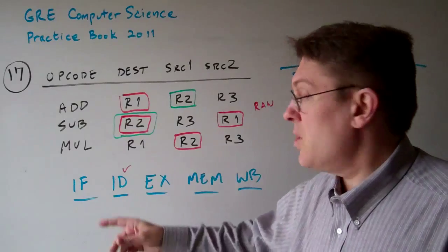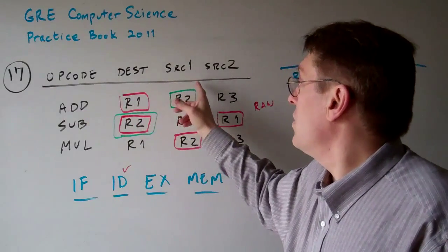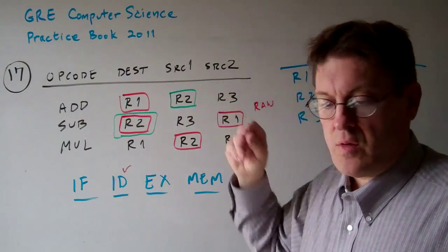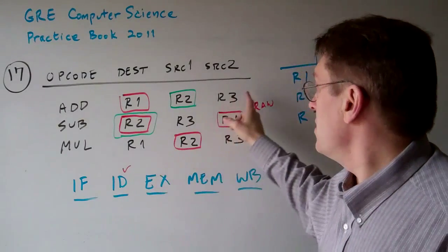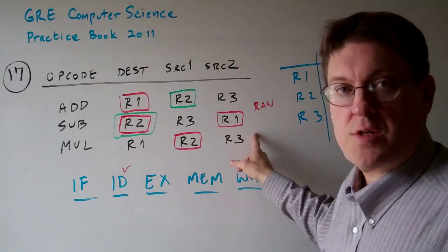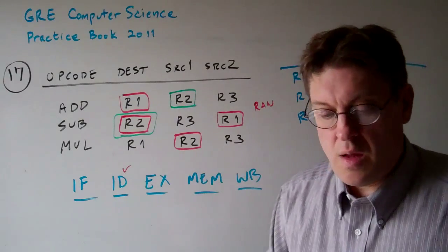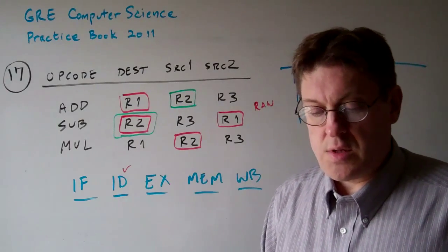We have the opcode, destination, source 1, source 2 here as listed in the question. This is the first instruction, this is the last instruction in the sequence.